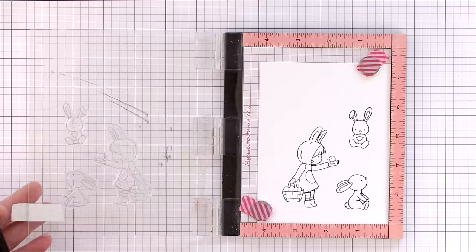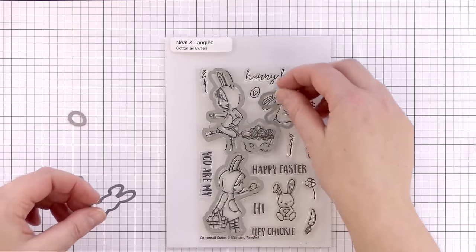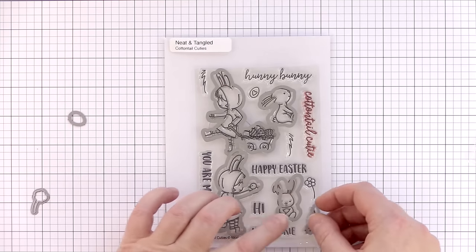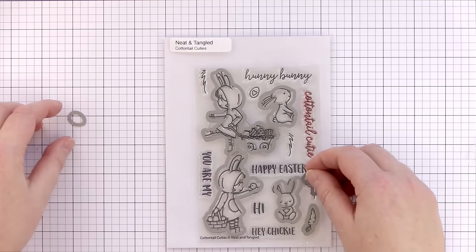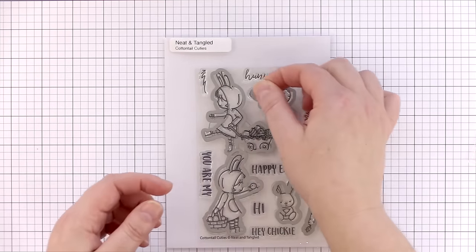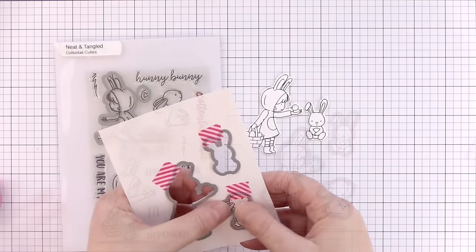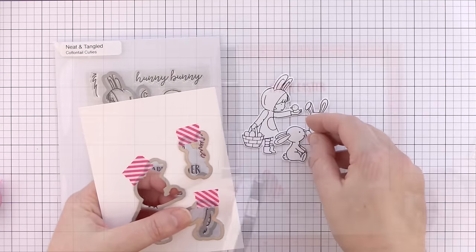So let's take a closer look at the Cottontail Cutie set. I've stamped out a few of the images on white card with a Copic-friendly black ink. The dies in the set match both the Little Girl and Rabbit images as well as the Carrot, Flower, and Egg. I've attached the corresponding dies to the images and held them in place with washi before running them through the Big Shot machine to die cut.